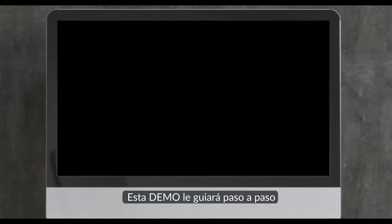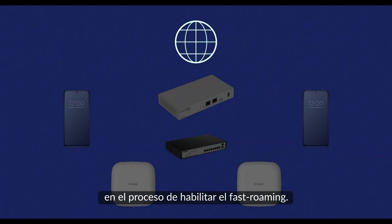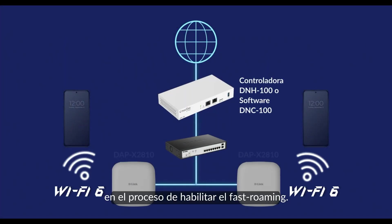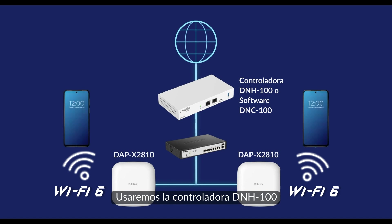This demonstration will guide you through a step-by-step process to enable the fast roaming feature. We will use the DNH-100 wireless controller and the DAPX-2810 access points.